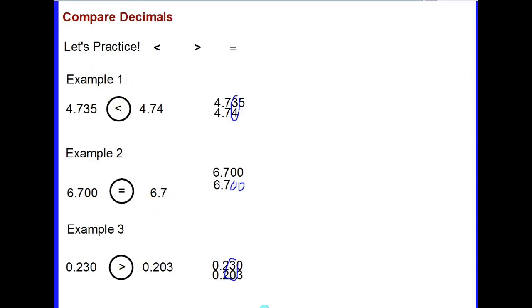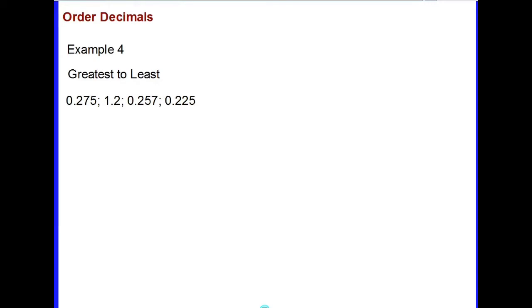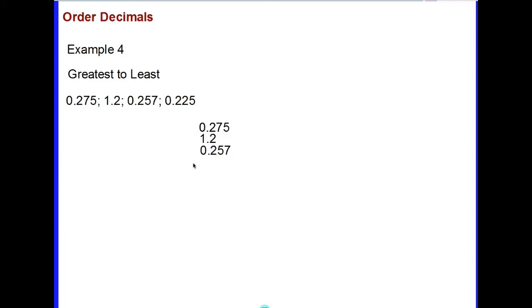Now let's practice ordering decimals from greatest to least. We follow the same procedure used for comparing. The first step is to take all the decimals and line them up — it's better to line them up than to try to look at them without lining them up, because it's easily confusing. We have four decimal numbers here to compare.